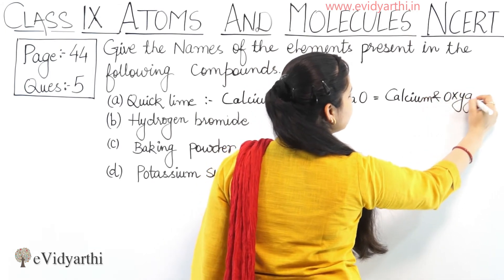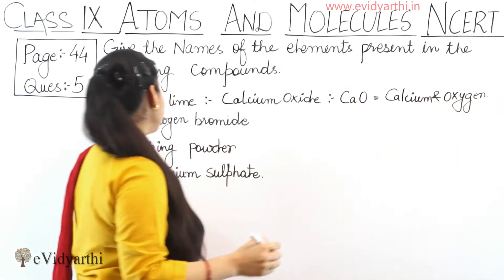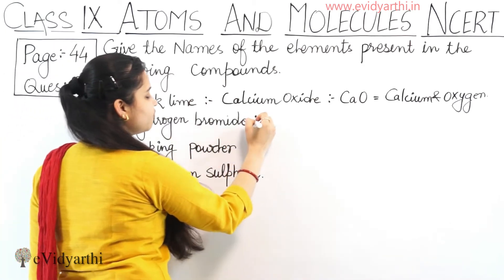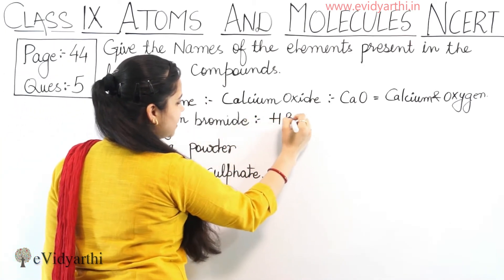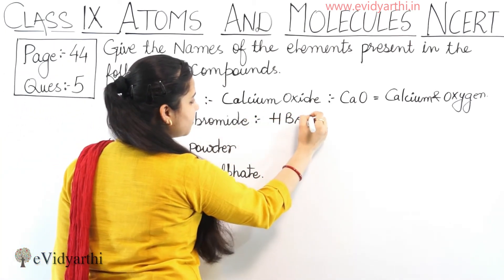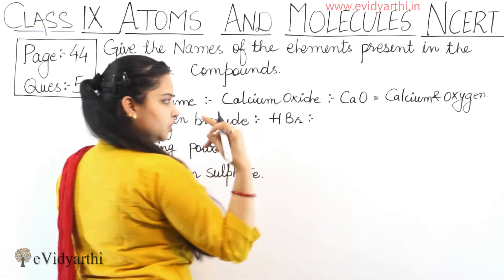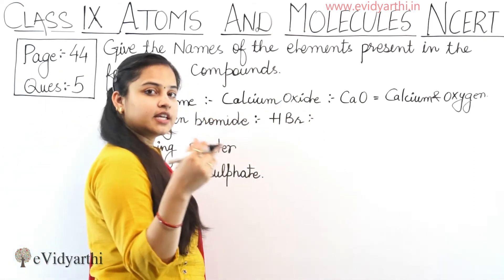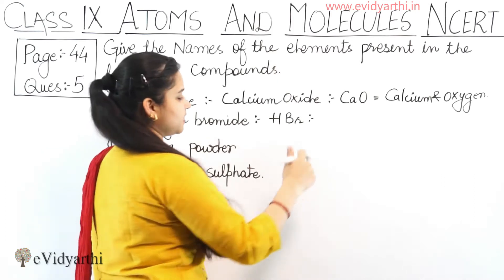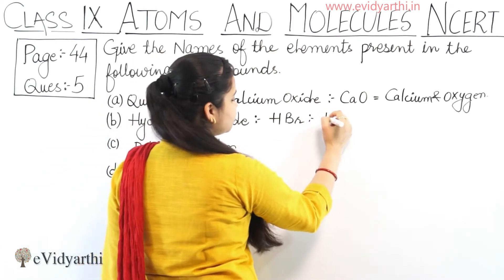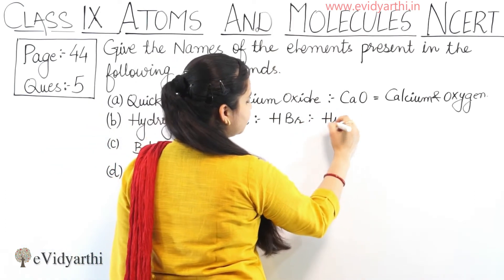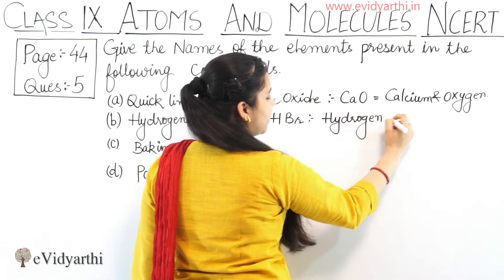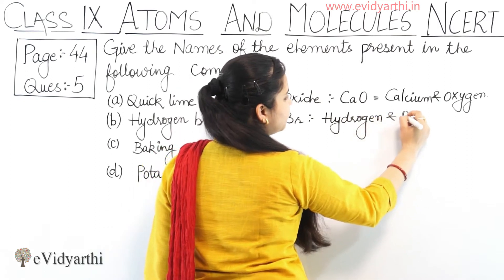Coming to the next one — Hydrogen Bromide. Its chemical formula is HBr. This compound is made up of two types of elements: Hydrogen and Bromine.